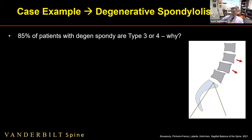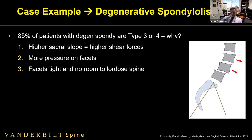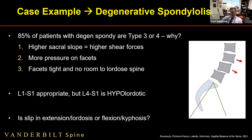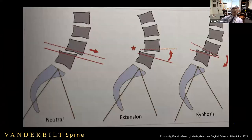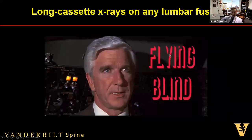Why are 85% of degen spondy patients Type 3 or 4? Likely three reasons: high sacral slope creates high shear forces causing L5 to slide forward on S1; more pressure is placed on the facets with higher lordosis; and there's less room for the facets to work, making them more likely to degenerate. Evaluating the slip in extension is important: extension maintains alignment but compresses the neural foramen, while kyphosis decompresses neural elements but impairs global alignment. I try to get long cassette films on any lumbar fusion to know the PI, sacral slope, and global picture.